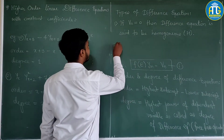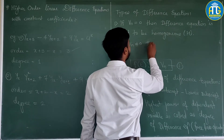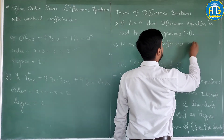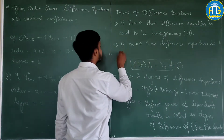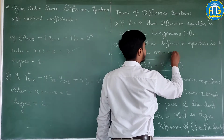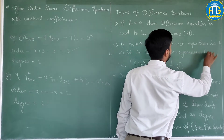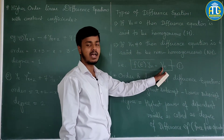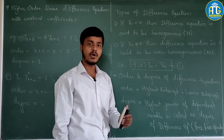Second: if v(n) is not equal to 0, then the difference equation is said to be non-homogeneous. So depending on v(n), we have two types: homogeneous and non-homogeneous.